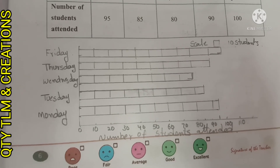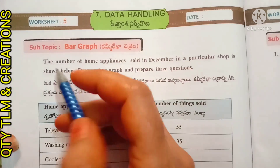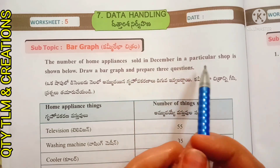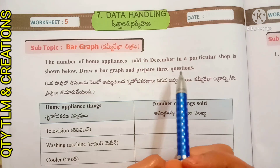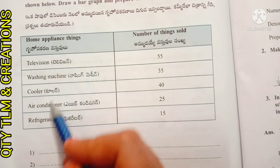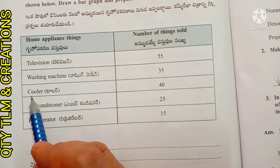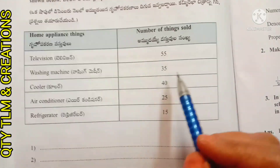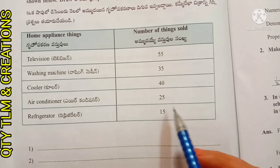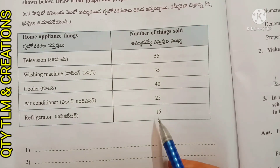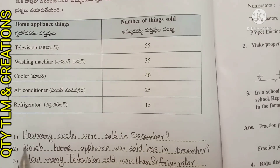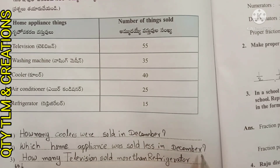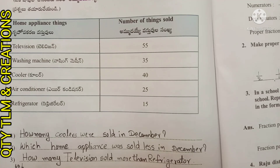This is the bar graph with the given data. Next, Worksheet 5. Subtopic: Bar Graph. The number of home appliances sold in December in a particular shop is shown below. Draw a bar graph and prepare three questions. Home appliances: Television — 55 sold, Washing Machine — 35, Cooler — 40, Air Conditioner — 25, Refrigerator — 15.